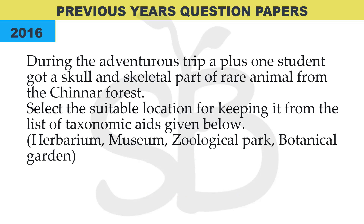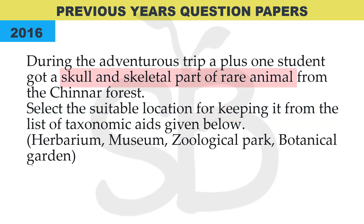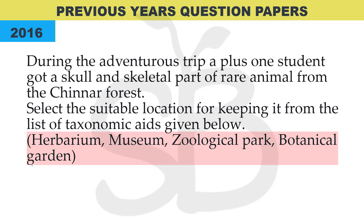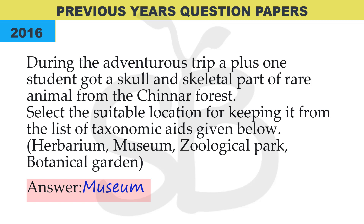From the 2016 annual exam: 'During an adventurous trip, a Plus One student got a skull and skeletal part of a rare animal from Chinnar forest. Select the suitable location for keeping it from the list of taxonomic aids given below.' The skull is an animal skull that needs to be preserved. The options are Herbarium, Museum, Zoological Park, and Botanical Garden. Herbarium is for dried plant specimens only. Zoological Park and Botanical Garden are for living organisms. Dead specimens are preserved in a Museum. So the correct answer is Museum.